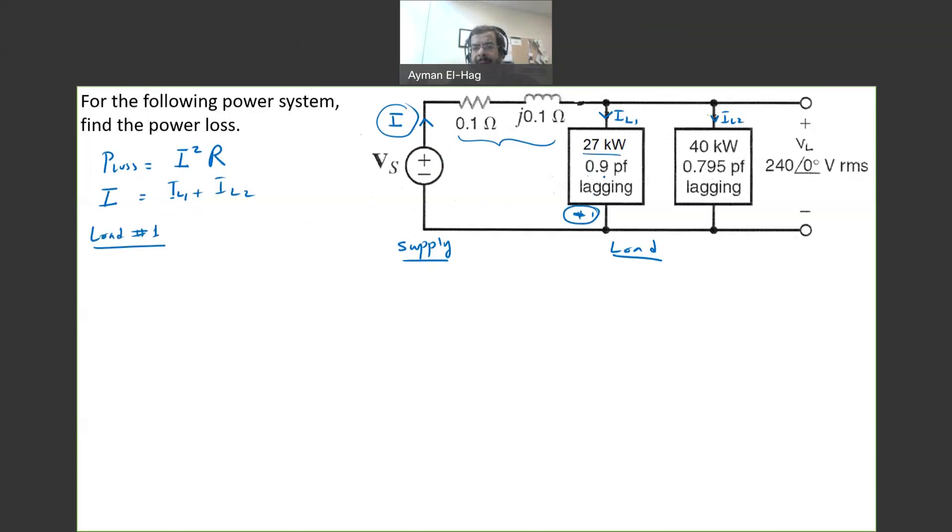We are giving P, the power factor, and it is lagging, and we know the voltage is 240 angle of zero. So, the magnitude of IL1, basically, very straightforward, it is P divided by V times the power factor. So, P is 27,000 divided by 240 times 0.9, and this will give me a current of 125 amps.